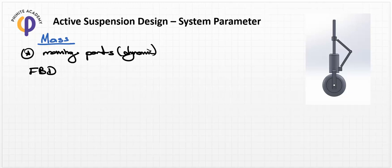The moving parts in the oleo structure include a link here and a link here — the first part consists of these two links. The second part contains the mass parameters related to the piston of the damping system at this position.